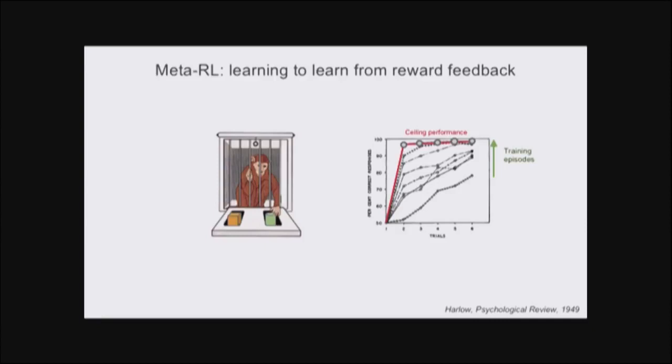Over the course of training with many object pairs, the monkeys gradually learned to identify the rewarded objects just from observing the outcome of the first trial. By the end of training, indicated by this red line, after many episodes, it's selecting randomly on trial one, but then uses the reward outcome to perform perfectly at trial two and thereafter. In effect, it's able to do one-shot learning and has learned an abstract inductive bias with roles for rewarded and unrewarded objects. This ability to learn more quickly from reward feedback with more episodes is what I'll refer to as meta-reinforcement learning.